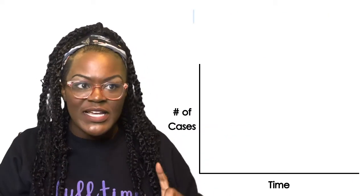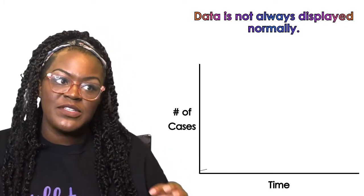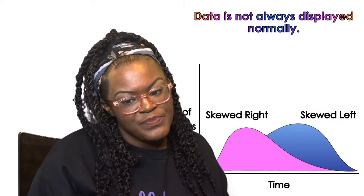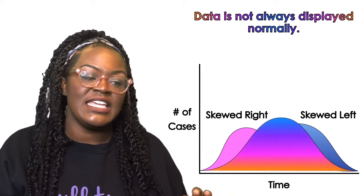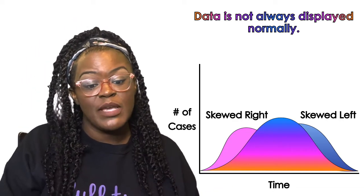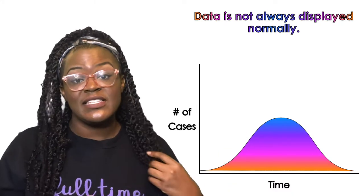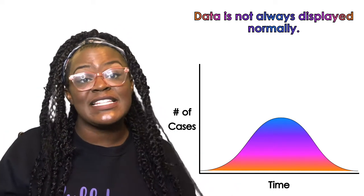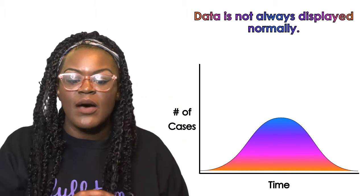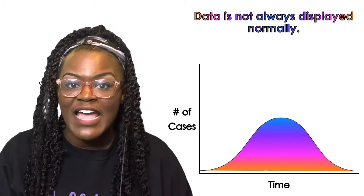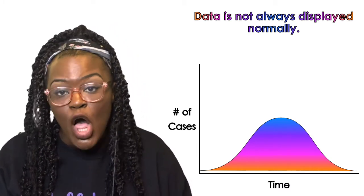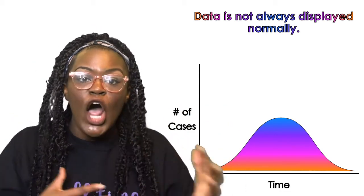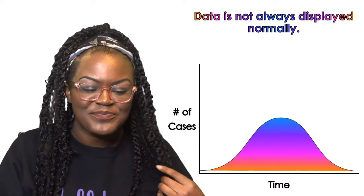Data is not always displayed normally. Sometimes you have data that's skewed to the left, sometimes skewed to the right. But we love to see when data is normally distributed because it helps us make predictions and draw conclusions. So going back to the coronavirus — since virologists predict the data will rise and fall at the same rate, we know when we will hit our peak when the number of cases this week is smaller than last week. That gives us an estimate of how much longer until all of this is finally over.